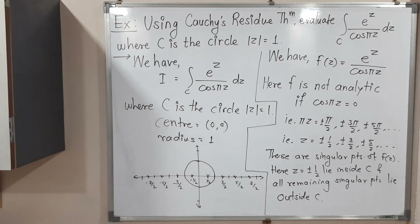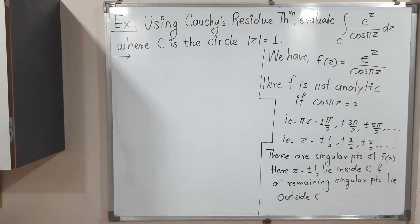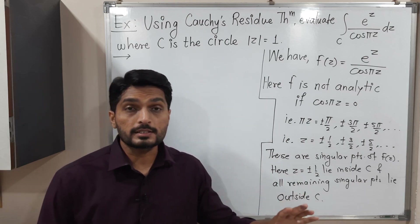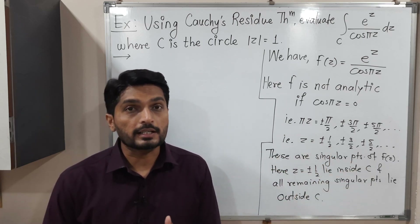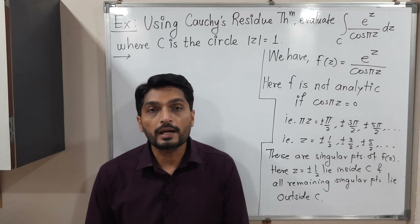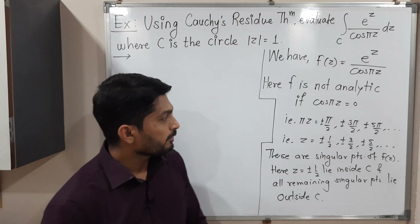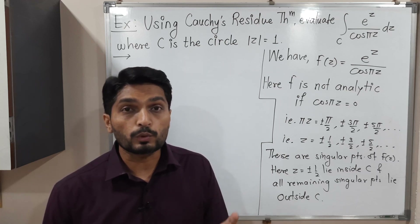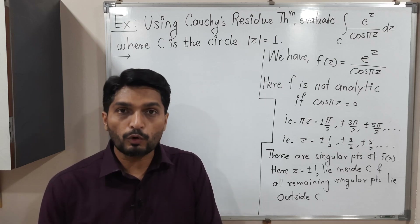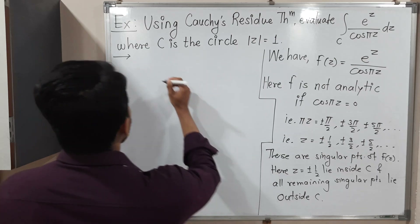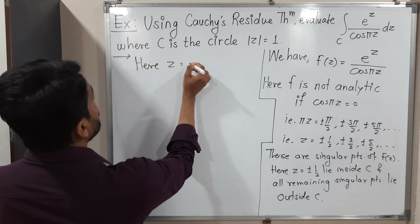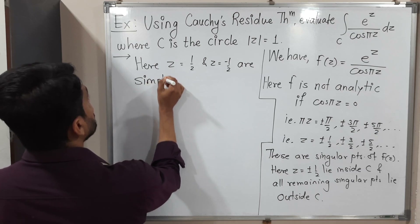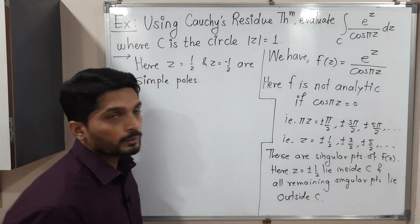Our next task is to find residue only at those two points. The definition of residue involves Laurent series expansion which is lengthy. However, if the singular points are poles, we have a simple formula to calculate residue. Fortunately, Z = 1/2 and Z = -1/2 are simple poles, meaning poles of order 1, so we can use the simple formula to calculate residues.